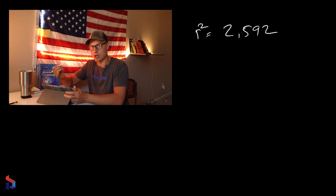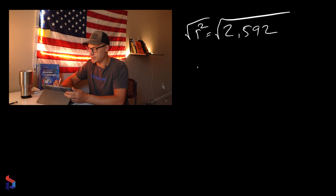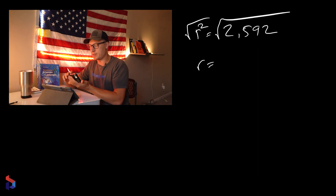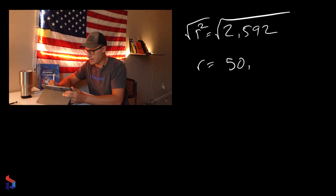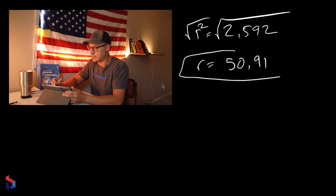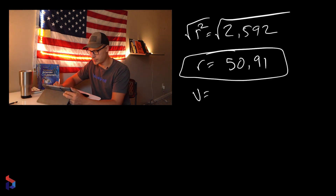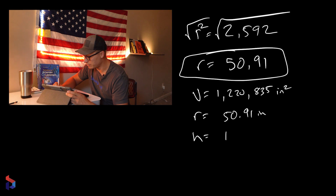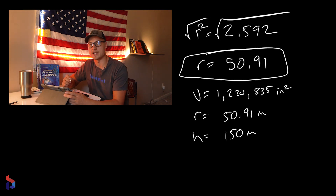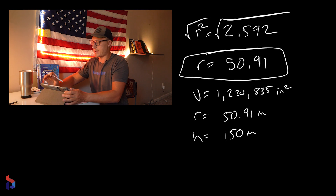Since it still says r², we have to take the square root of both sides. Taking the square root of 2,592 gives us approximately 50.91. So now we know the radius of the cylinder. To summarize: Volume = 1,220,835 cubic inches, radius = 50.91 inches, and height = 150 inches — those are the dimensions of the cylinder.